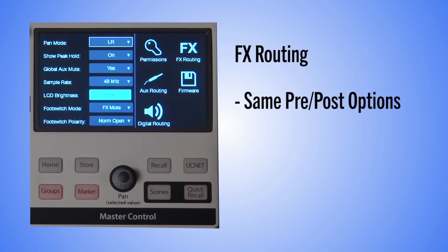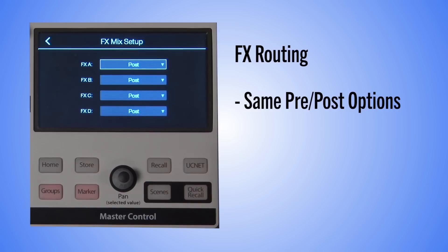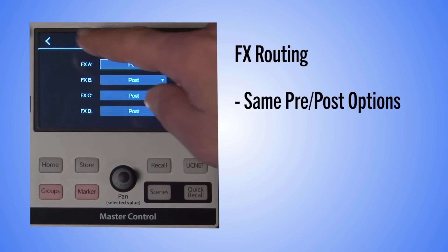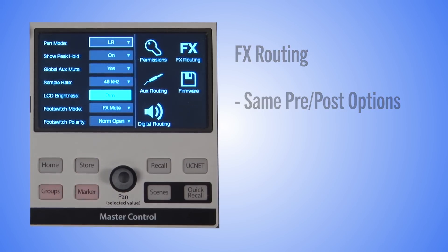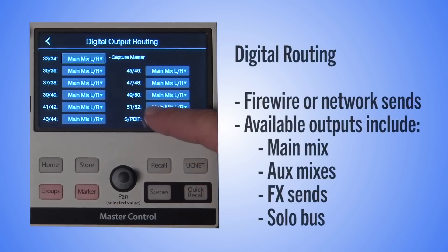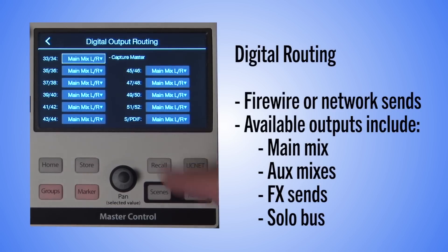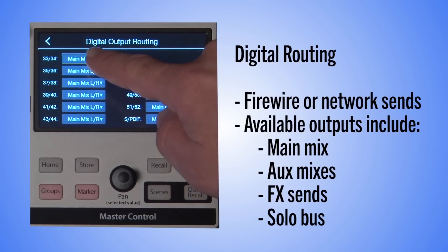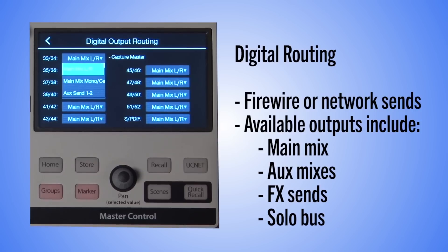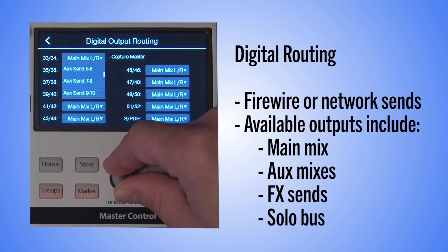The effects routing provides the same options for changing the pre/post settings for the four effects mixes. Typically, these will be left in the default post position, so you don't continue hearing effects on a channel that has been turned down in the main mix. Digital routing is where you assign which outputs are routed to the auxiliary digital outputs.